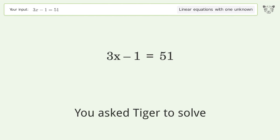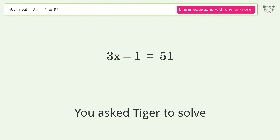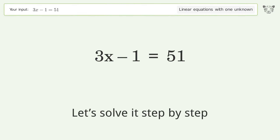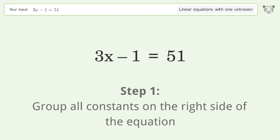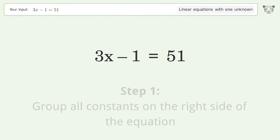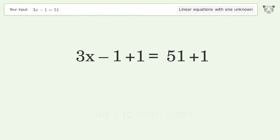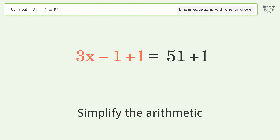You asked Tiger to solve this — it deals with linear equations with one unknown. The final result is x equals 52 over 3. Let's solve it step by step. Group all constants on the right side of the equation, add 1 to both sides, and simplify the arithmetic.